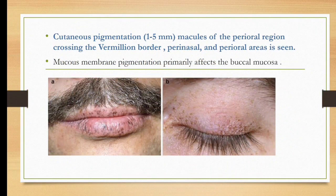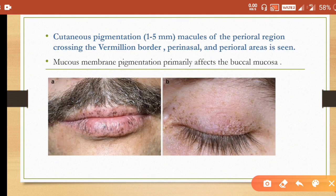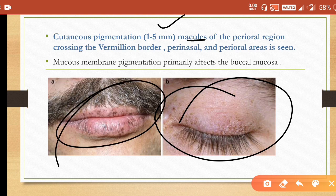Cutaneous pigmentation consists of 1 to 5 mm macules in the perioral region crossing the vermilion border, perinasal and perioral areas. Mucous membrane pigmentation primarily affects the buccal mucosa. Such peculiar macules are characteristic of Peutz-Jeghers syndrome.